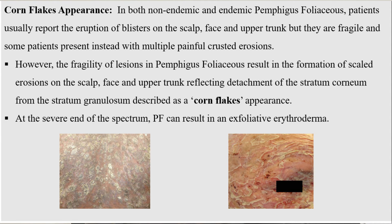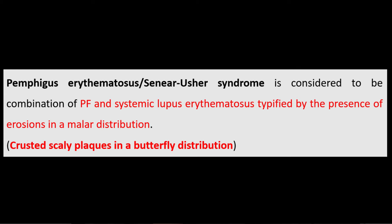Senior-Usher syndrome is a combination of pemphigus foliaceous and systemic lupus erythematosus. You see erosions in these patients in a malar distribution, with crusted scaly plaques in a butterfly pattern on the face. That brings us to the end of the video.